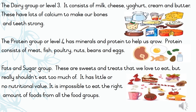The protein group, or level four, has minerals and protein to help us grow. Protein consists of meat, fish, poultry, nuts, beans and eggs.